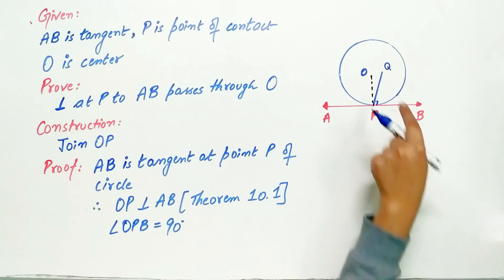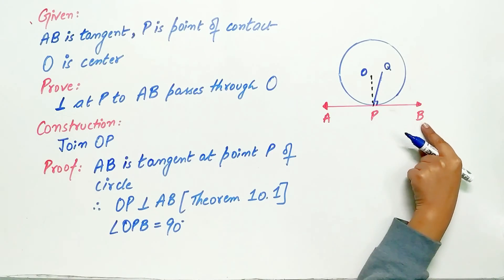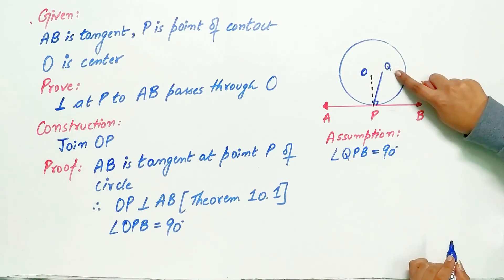We have assumed that angle QPB is equal to 90 degrees and Q is not the center of circle.